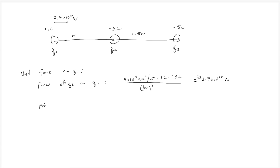Now let's find the force of q3 on q1. You just set it up like a normal problem: 9 times 10 to the 9 newton meters squared over Coulomb squared times 1 Coulomb times negative 5 Coulomb.